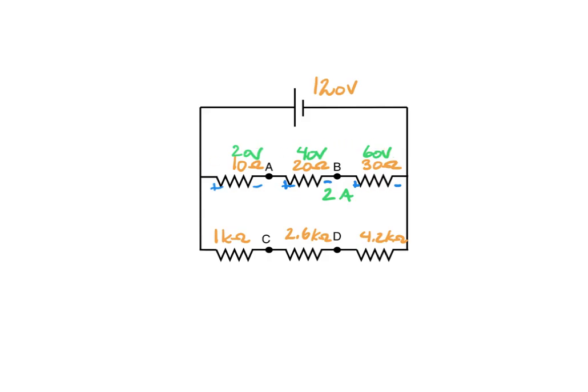Let's move on to the second branch. In this branch, I have 1k ohm plus 2.6k ohms plus 4.2k ohms, which adds up to 7.8k ohms total. From there, I can determine my current by dividing 120 volts by 7.8k ohms, which gives me a current of 15.4 milliamps.